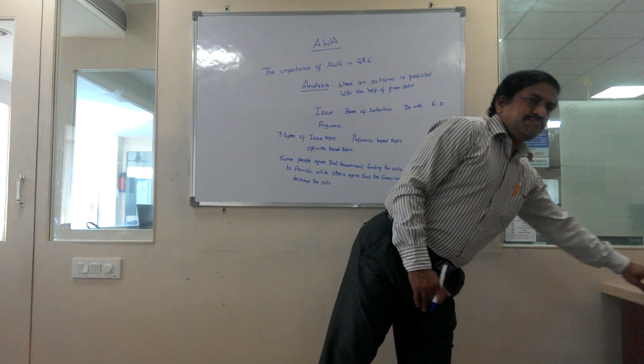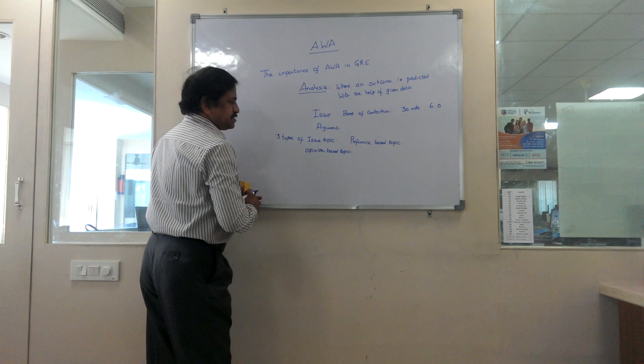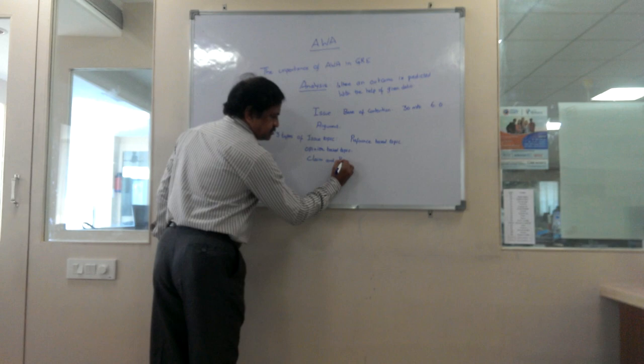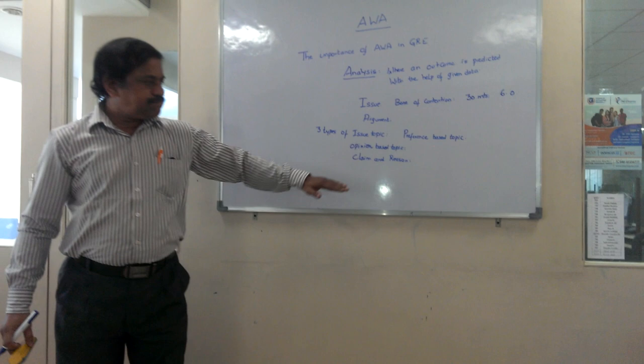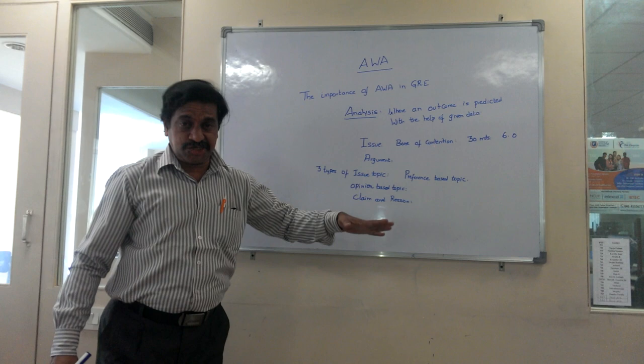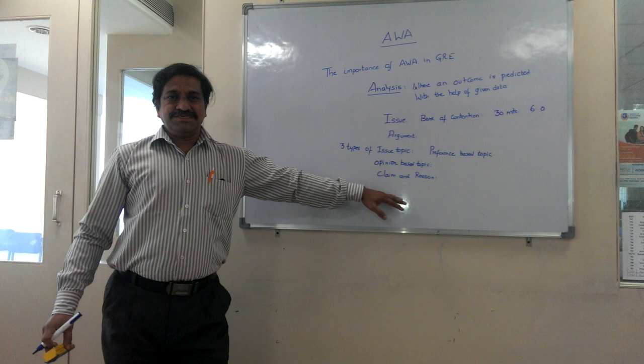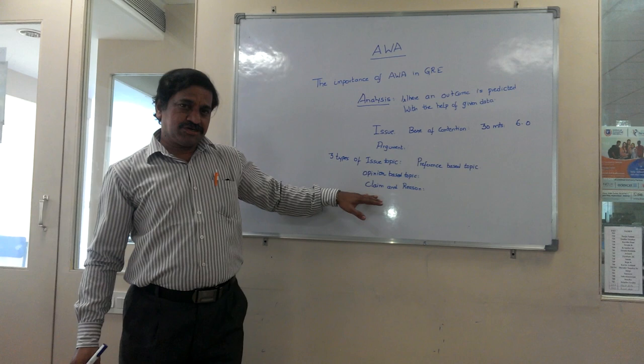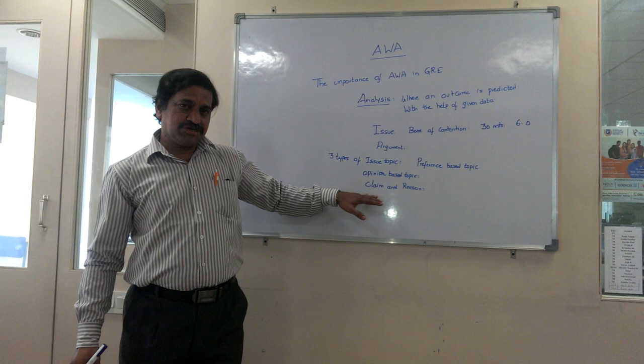The third type of topic is called claim and reason. A claim is a statement made by the author which he believes to be true. The reason is a statement that he provides to justify his claim. The student has the opportunity to either support the claim and verify whether the reason justifies the claim, or to challenge either element.